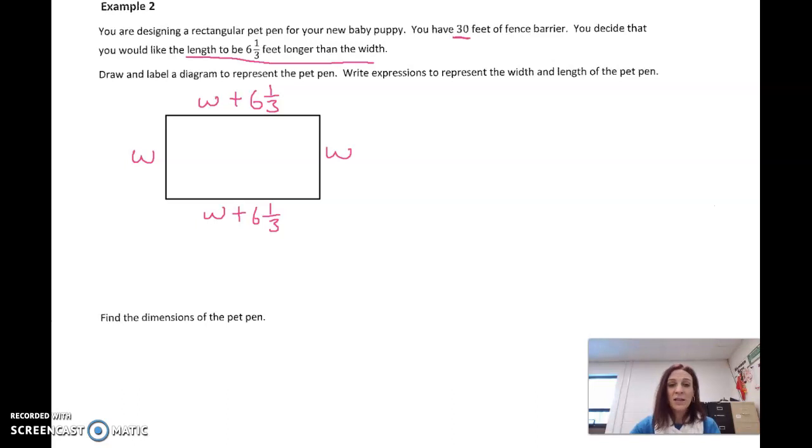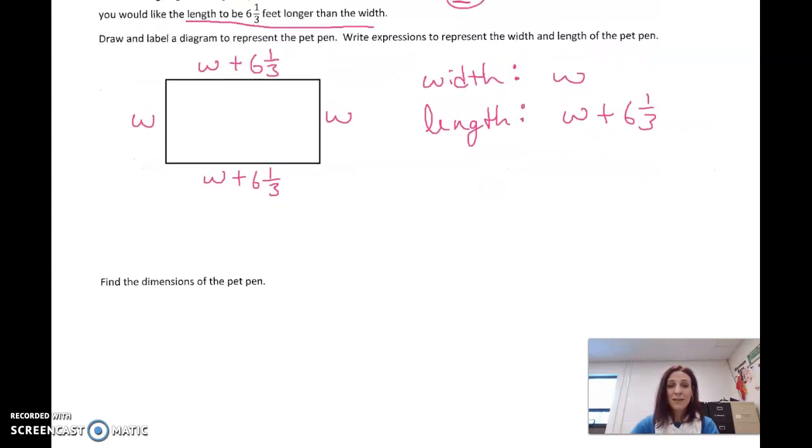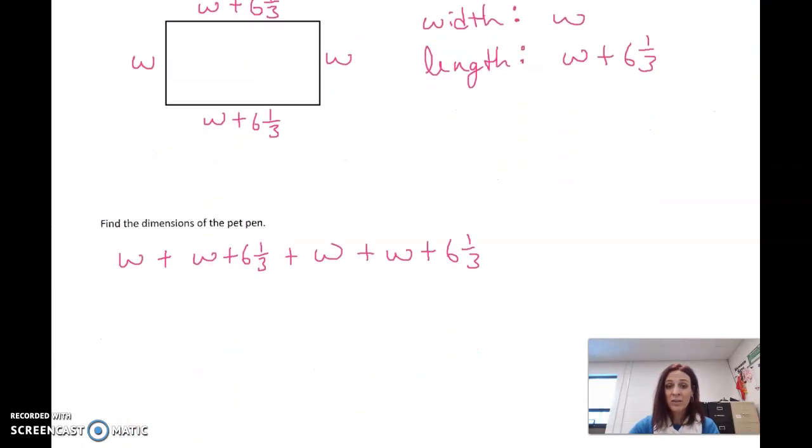So I am going to say my width is just W. And my length, which I actually already did, is whatever the width is plus six and a third. Okay, so now let's figure it out. We know that equals 30 total. So when we come down here to find the dimensions, I basically just have to add all of this up.